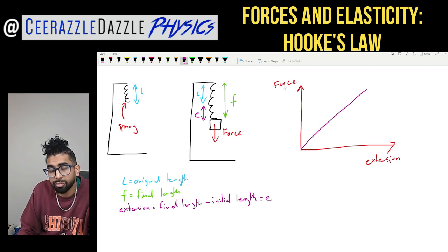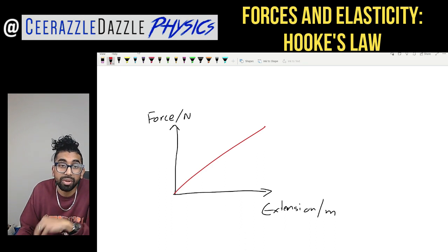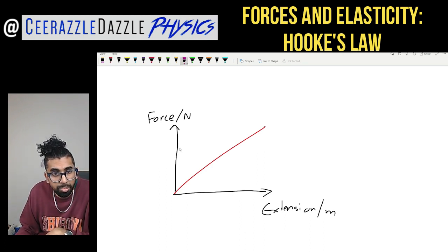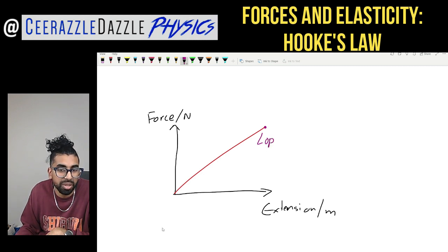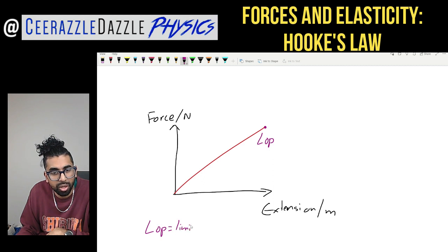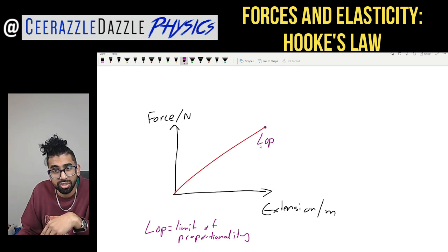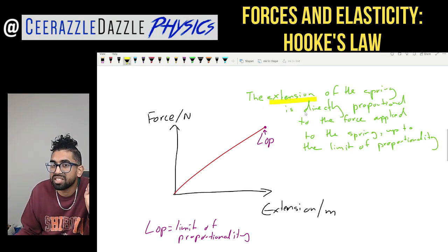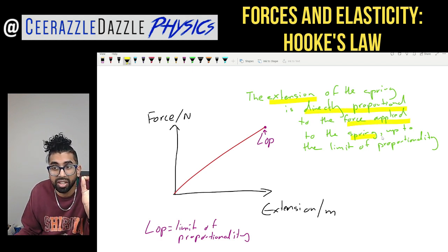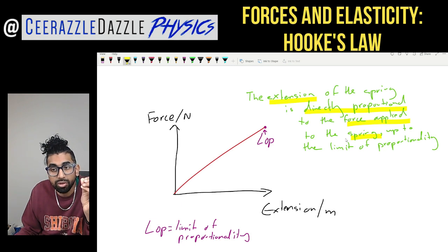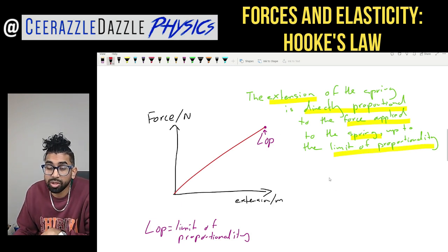In real life it looks slightly different, but for now let's talk about force and extension being directly proportional to each other. On the graph, the last point at which they are directly proportional is called the limit of proportionality — LOP. The extension of the spring is directly proportional to the force applied, up to the limit of proportionality.